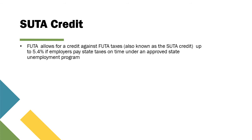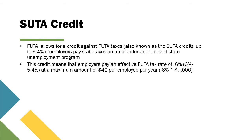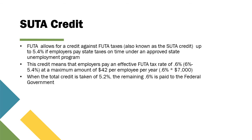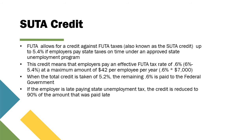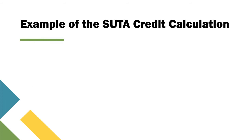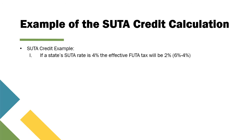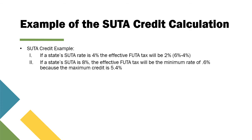FUTA allows for a credit against FUTA taxes, also known as the SUTA credit, of up to 5.4% if employers pay state taxes on time under an approved state unemployment program. This means employers pay an effective FUTA tax rate of 0.6% (6% minus 5.4%), for a maximum of $42 per employee per year. For example, if a state SUTA rate is 4%, the effective FUTA tax will be 2% (6% minus 4%). If a state SUTA rate is 8%, the effective FUTA tax will be the minimum rate of 0.6% because the maximum credit is 5.4%.